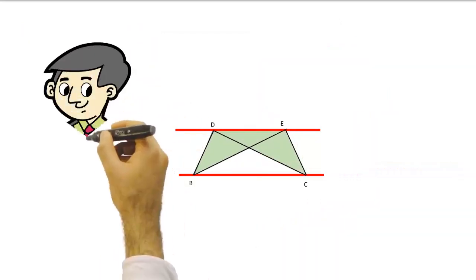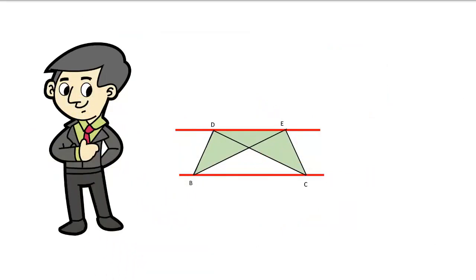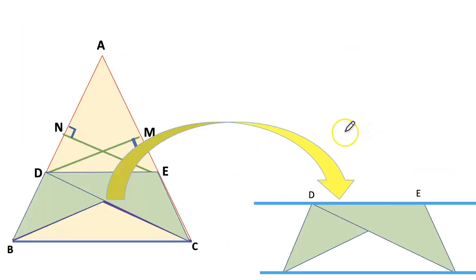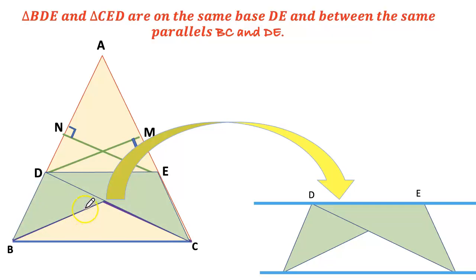Triangles of the same base and between the same parallels are equal in area. So area of ABC equals to area of DBC. We can see here the triangle BDE and triangle CED are on the same base and between the same parallels. And the area becomes equal. So we can write the next line. Area of BDE equals to area of CED.